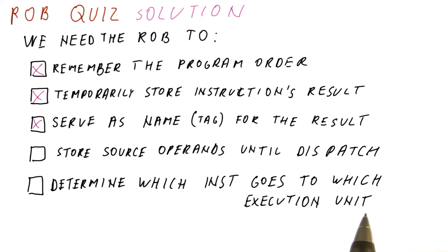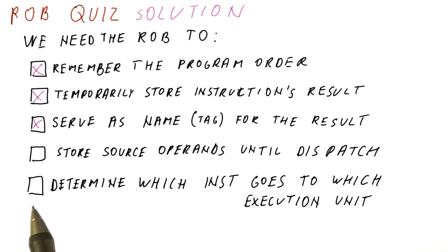We know which execution unit the instruction should go to because different execution units have different reservation stations. So when we issue an instruction, we send it to the right set of reservation stations, and that determines what the execution unit is going to be. So this answer is also not correct.